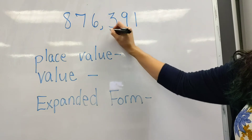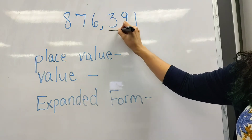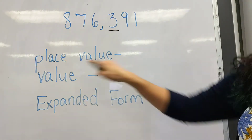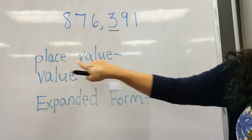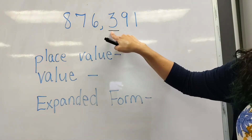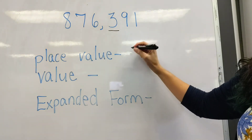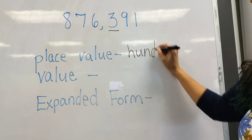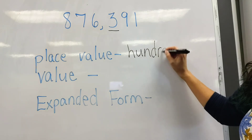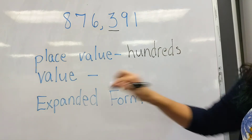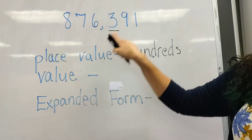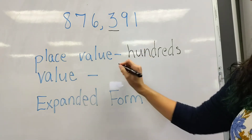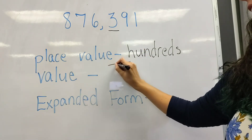I'm going to underline a digit. I've underlined the three. The three, if I'm talking about place value, it is in the hundreds place. The value of the three, since it's in the hundreds place, would be three hundred.